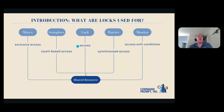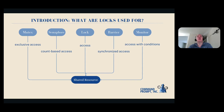Next we get into the meat of the presentation: locks themselves. A thread is allowed to take out a lock on a shared resource — it could be a table, an index, or a file descriptor. A given process takes out a lock with given capabilities: you can say 'I need this resource to be able to read from it,' or 'to write to it,' or 'to make structural changes.' This is where all the locks in Postgres live.